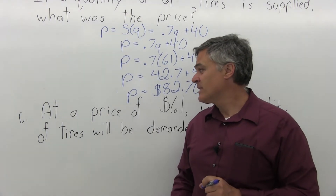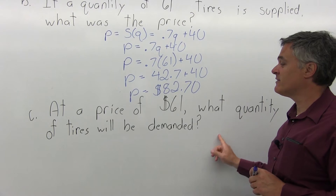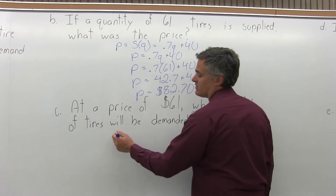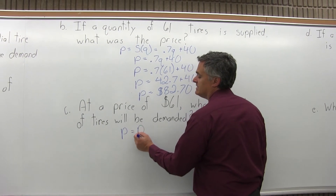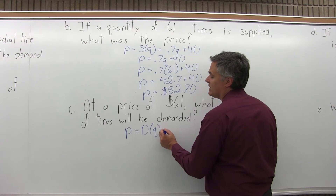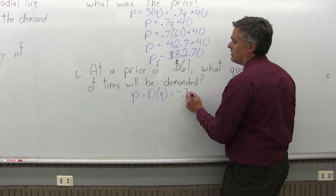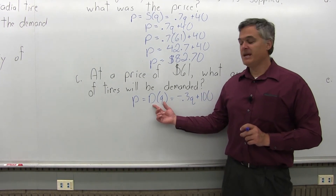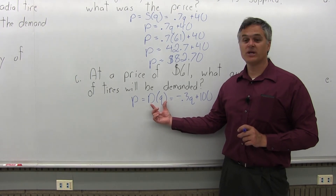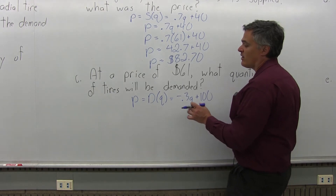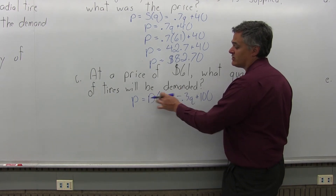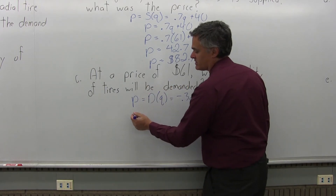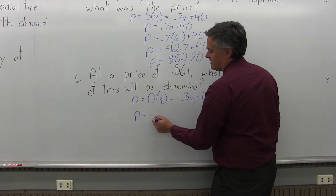Part C: at a price of $61, what quantity of tires will be demanded? Because it says demand, I go to the other equation: P equals D(Q) equals negative 0.3Q plus 100. The D is for demand — this part of the equation distinguishes it from the supply equation. Once I know I've chosen the right one, I don't write this part. I chose this because the question asked for demand, so I use the demand equation instead of the supply equation.